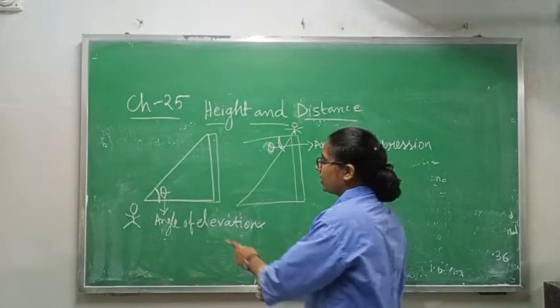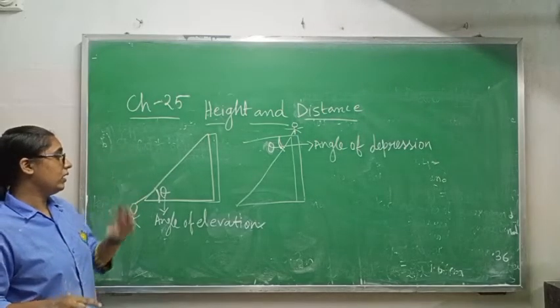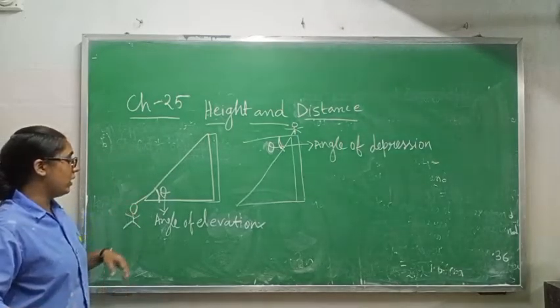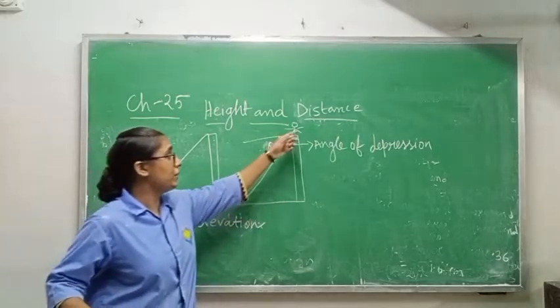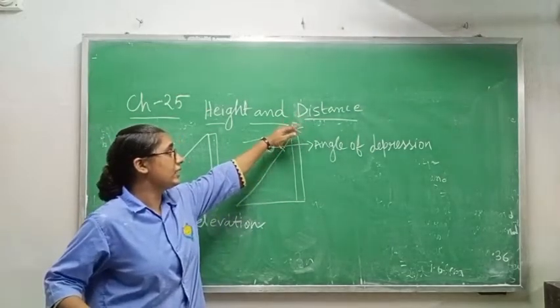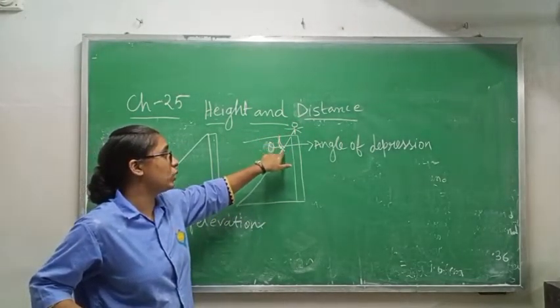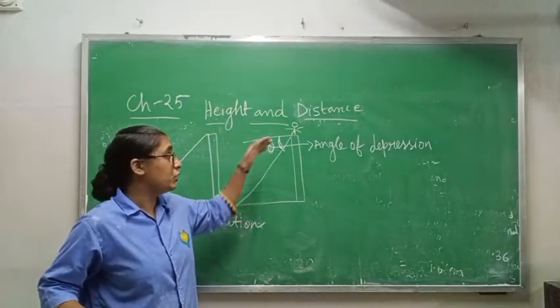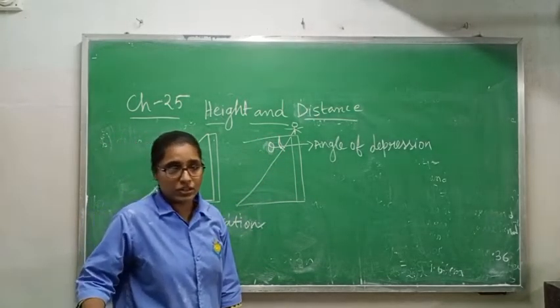If a person is standing and looking up, whatever angle he or she makes with their eyes, that angle is known as the angle of elevation. But if a man is standing and looking down, whatever angle he makes at the top, that angle is known as the angle of depression.